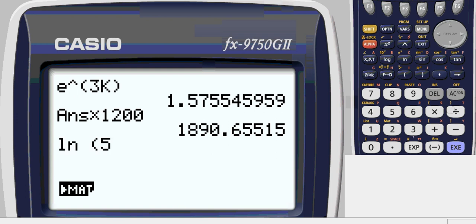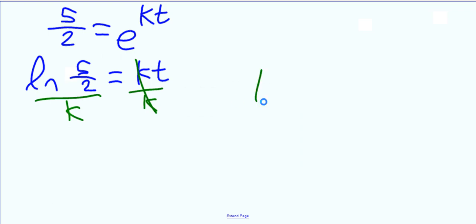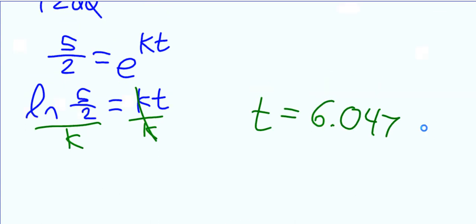Natural log of 5 over 2 divided by alpha k. And the time was in hours. We'll leave it over 6 hours.